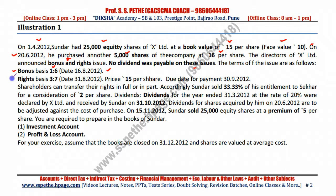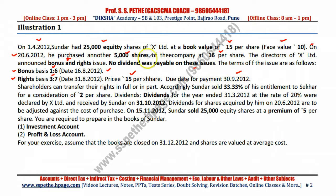Further, it is given that the right share basis is 3 each to 7, and the date is 31st August 2012. The right share is issued after the bonus share issue. You have to pay some amount for right shares — it is not free of cost. The price is 15 per share, and the due date for payment is 30th September 2012. So issue date is 31st August and due date is 30th September.